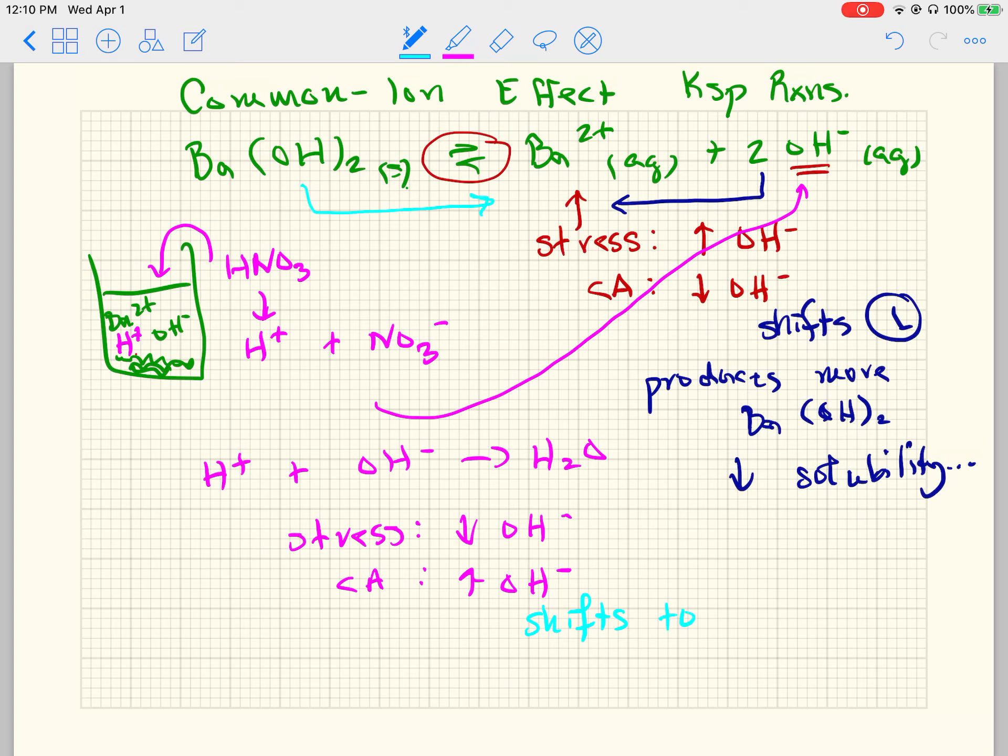it will shift, so it's going to shift now to the right, so I'm going to write that out, shift to the right in order to head back to equilibria, and it will produce more ions. And so as a result of producing more ions, it will increase the solubility of barium hydroxide. So common ions decrease it, ions that react with the ions of the Ksp increase the solubility.